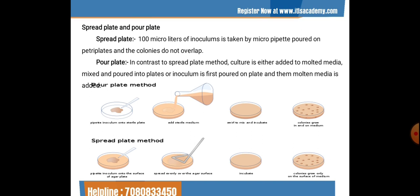In the pour plate method, you pipette the inoculum onto a sterile plate, add the molten media, swirl to mix, and incubate. Colonies grow both inside and on the upper layer of the media. In the spread plate method, you pipette the inoculum onto the surface of the already solidified agar, spread it evenly, incubate, and observe colonies growing only on the surface — not within the media.